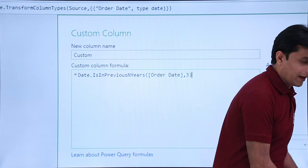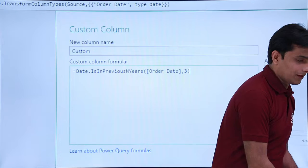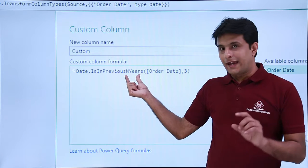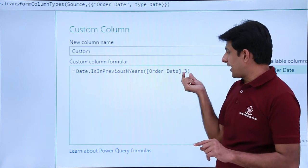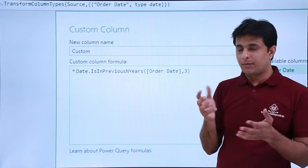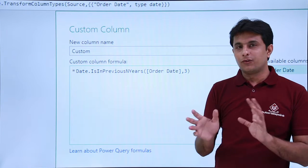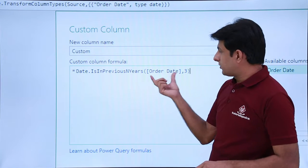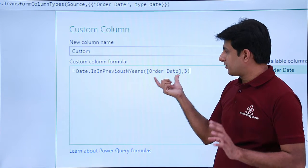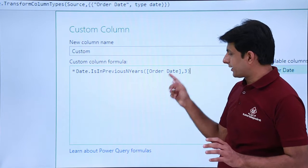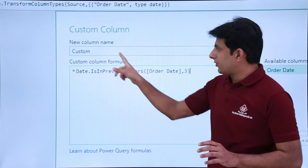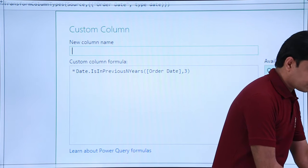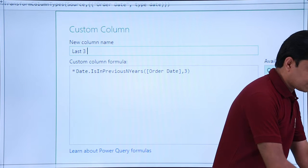This is something new — a parameter. I'll double-click on the Order Date column name, then add comma three. The column name is 'Date is in previous N years' and three is the N parameter — it can be 3, 4, 5, 10, 12, anything. Make sure you don't type the column name manually; just double-click to get it. After doing that, I'll change the column name to 'Last Three Years'.